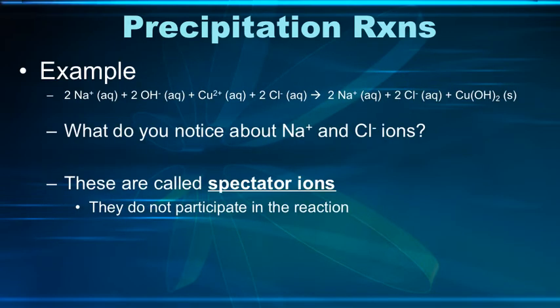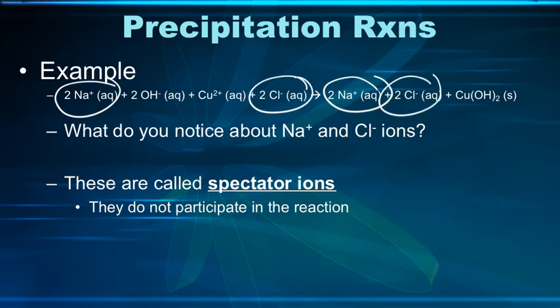So looking at the complete ionic equation, what do you notice about the sodium and chloride ions? Hopefully you notice that there are sodium ions here. There's two aqueous sodium ions on the left side of this arrow and two aqueous sodium ions on the right side of the arrow. There are two aqueous chloride ions on the left and two aqueous chloride ions on the right. And so really nothing has happened to them from where they are on the left side of this arrow to where they are on the right side of the arrow.